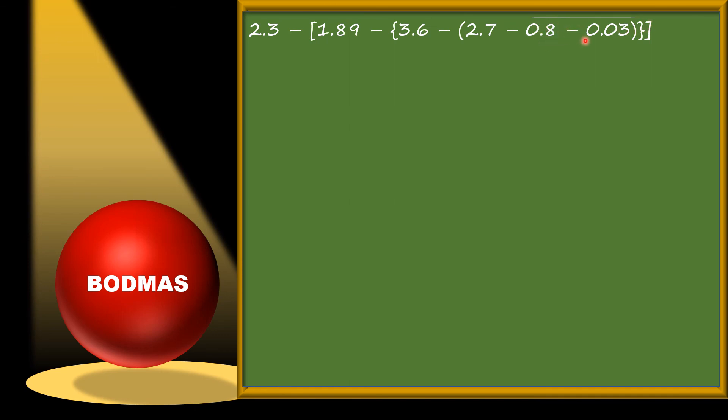Now focus on BODMAS and solve this question. Here one more thing is present: a line bracket. We treat the line bracket like any other bracket, and we need to solve it first. So we perform 0.8 minus 0.03, which involves decimal numbers. Just subtract 0.03 from 0.8 according to BODMAS, because the line bracket must be solved first, then small, then curly, then big.